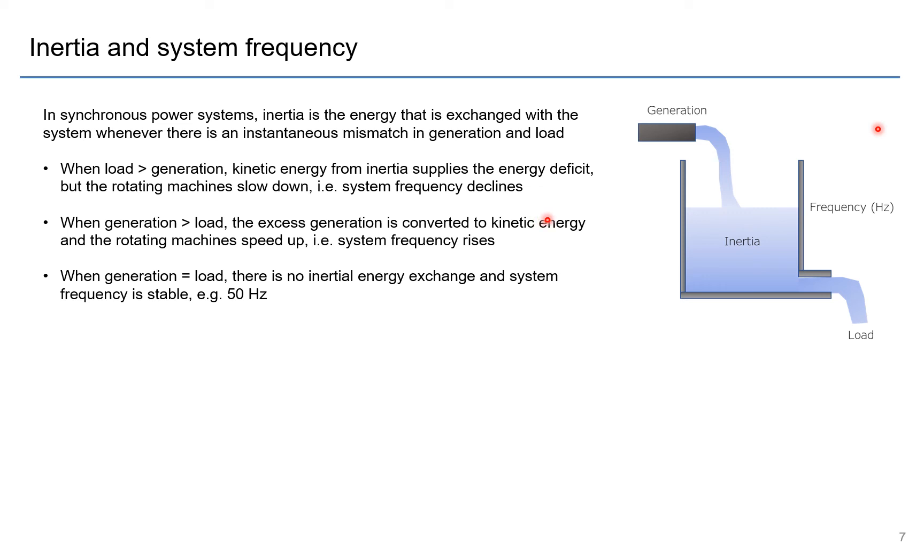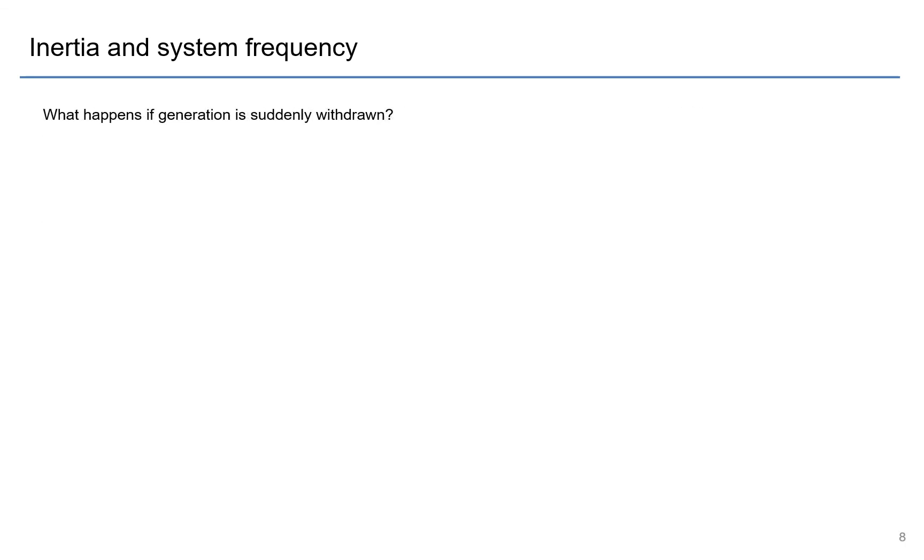When in the opposite scenario you have generation that is greater than load, so you have more water filling the tank and therefore the water level rises. And when you have the exact matching between generation and load, then there should be no inertial exchange and basically your frequency should stay perfectly stable.